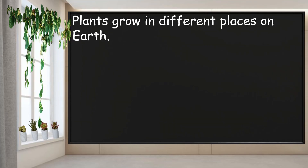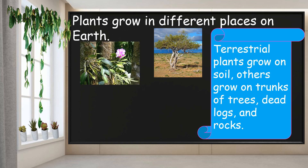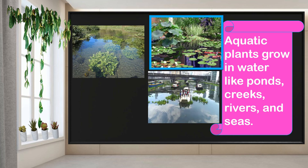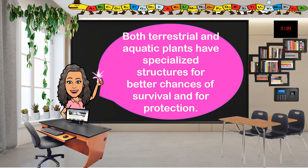Plants grow in different places. Terrestrial plants grow on soil, others grow on trunks of trees, dead logs, and rocks. Aquatic plants grow in water like ponds, creeks, rivers, and even under the seas. Both terrestrial and aquatic plants have special structures for better chances of survival and protection. Just like animals, there are terrestrial plants as well as aquatic plants. Terrestrial plants live on land, while aquatic plants live in water.